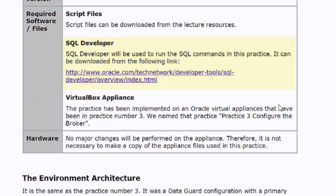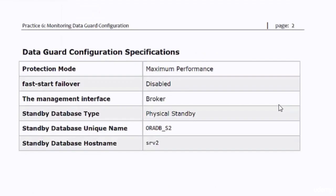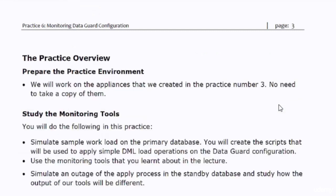We will work on the same appliances that we created in Practice number 3 — Configure the Broker. You don't have to make a copy of them; we will make no changes to our Data Guard configuration. The specifications are the same as those configured in Practice number 3.